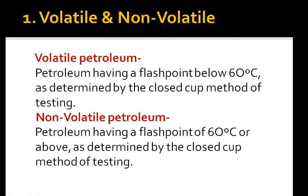Volatile petroleum: petroleum having a flash point below 60 degrees as determined by the closed cup method of testing. Non-volatile petroleum: petroleum having a flash point of 60 degrees or above as determined by the closed cup method of testing.